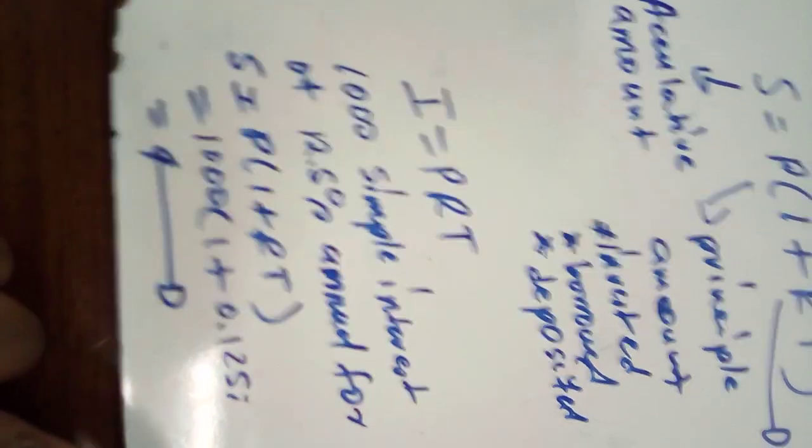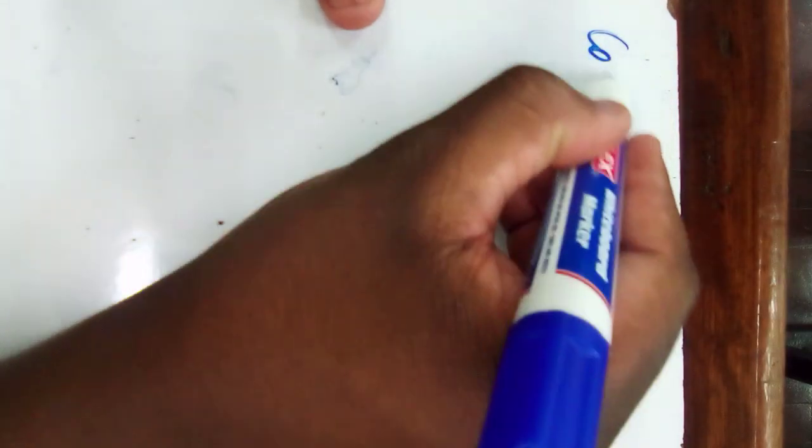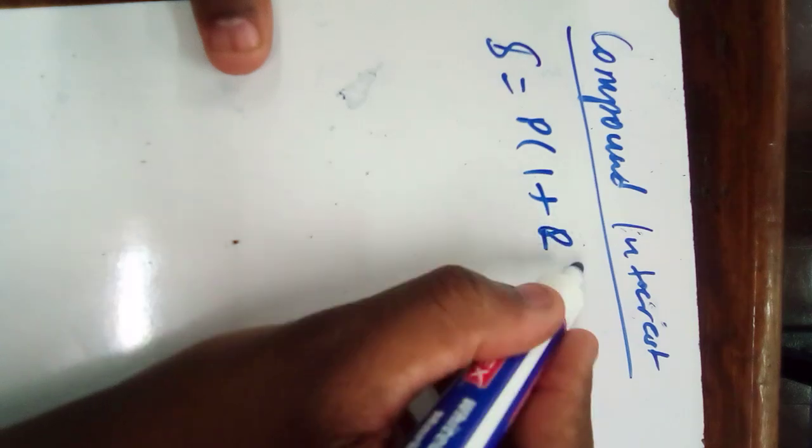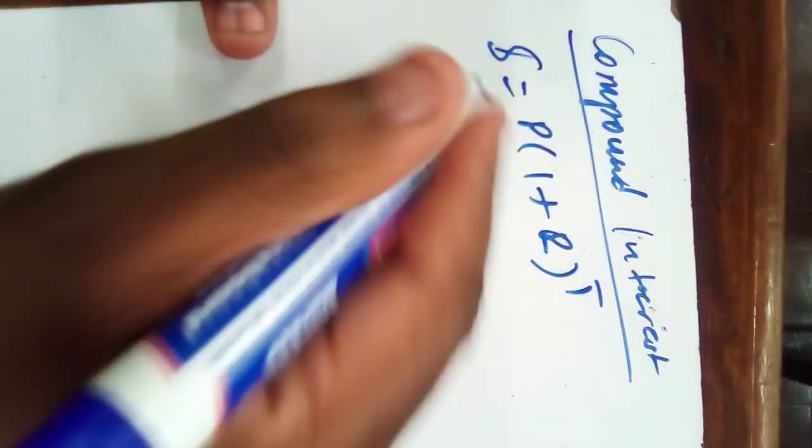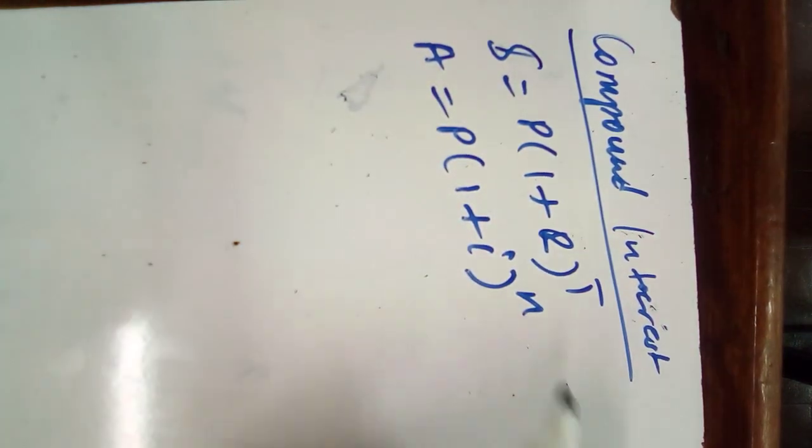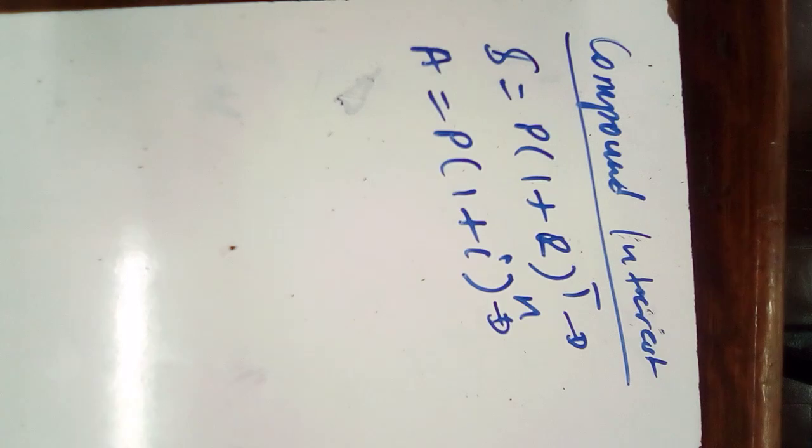So now when you have this, we're going to move to compound interest. For compound interest, we use the formula S equals to P in brackets 1 plus R to the power T. Some books they could say A equals to P in brackets 1 plus I to the power n. It's also fine because in your question papers normally they use this one, but in your study guide they use this one.